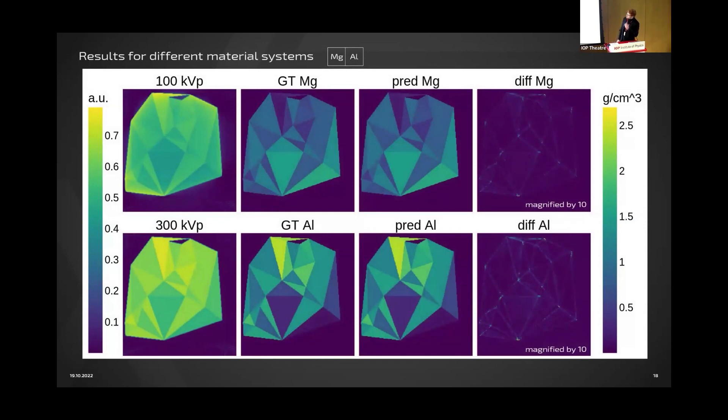Let's have a look at the results. On the very left, we have the low and the high energy tomograms. The ground truth of material A, in this case magnesium, and down here, aluminum.